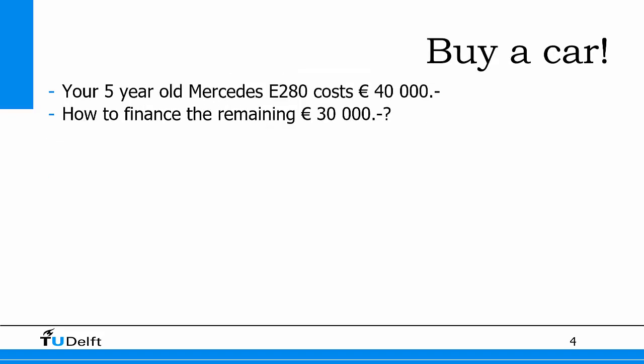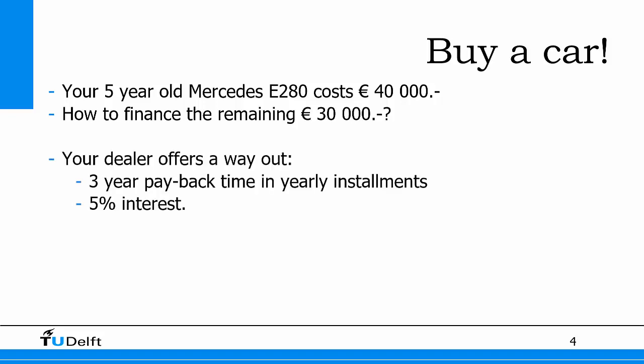You buy a five-year-old Mercedes E280 which costs about 40,000 euros. You had 10,000 euros, so how do you finance the remaining 30,000 euros? The dealer offers you a three-year payback time in yearly installments, and on top of that he charges 5% interest for this deal.